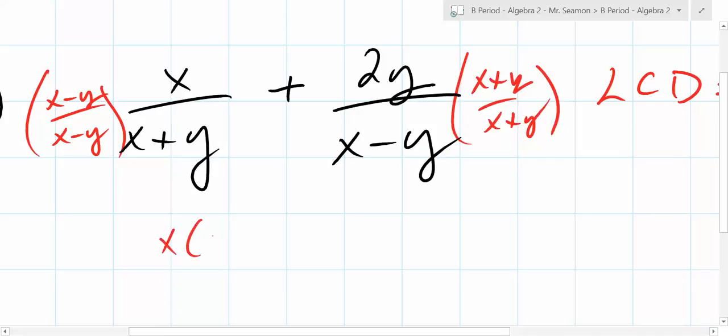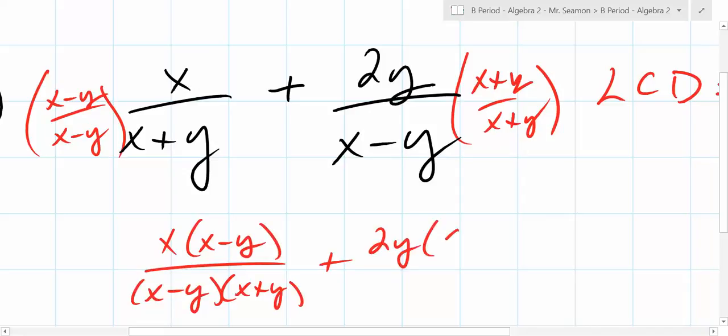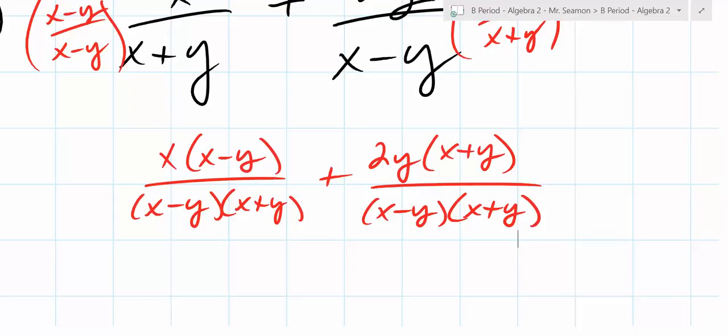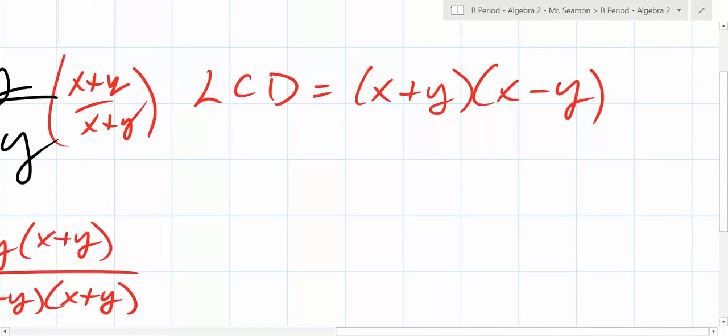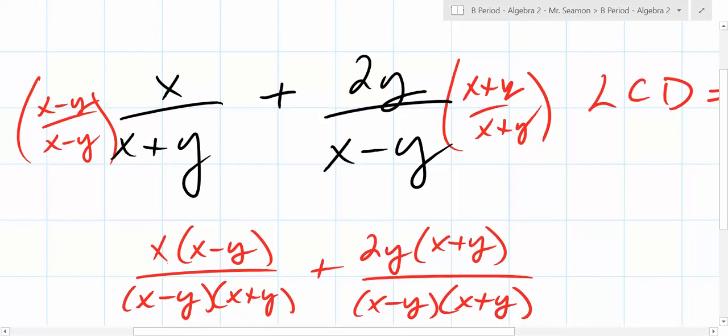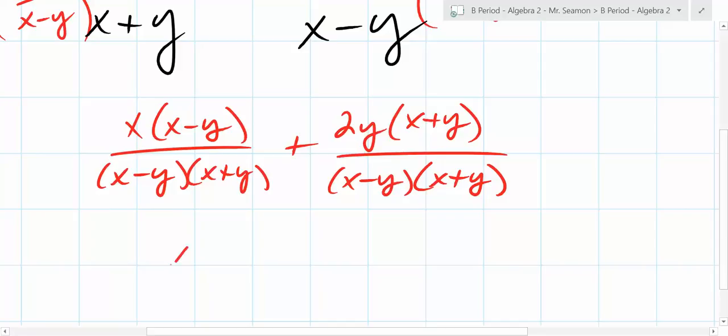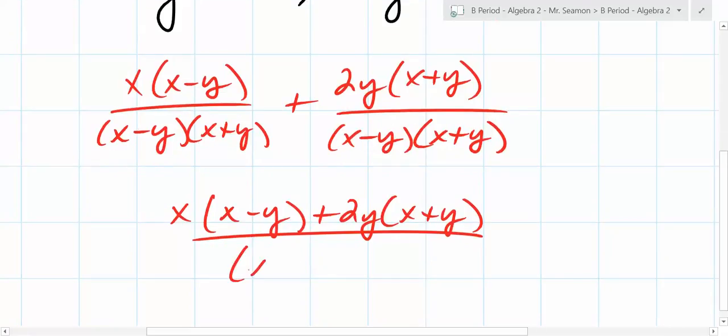So what are you going to end up with? X times X minus Y over X minus Y times X plus Y plus 2Y times X plus Y over X minus Y times X plus Y. Now what do I have? We're not canceling. We now have common denominators. The reason we were trying to find the LCD is because we want to add the fractions. So now it's just X times X minus Y plus 2Y times X plus Y all over X minus Y times X plus Y.